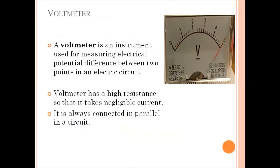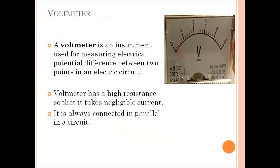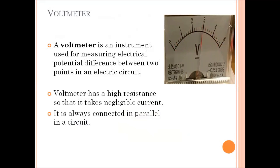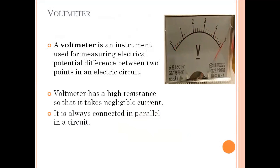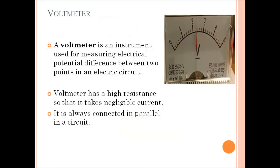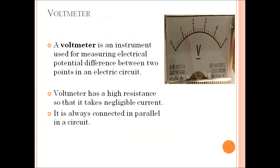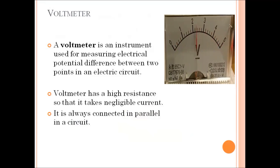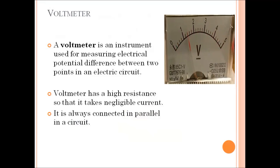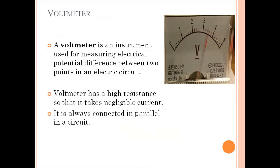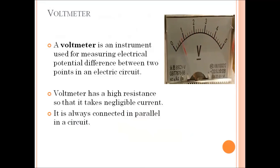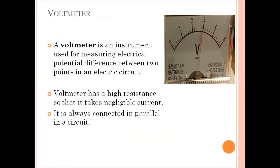Next we have voltmeter. A voltmeter is an instrument used for measuring electric potential difference between two points in an electric circuit. Important points: a voltmeter has high resistance so that it takes negligible current, because its primary function is to measure the potential difference between two points, not the electric current. It is always connected in parallel in a circuit.